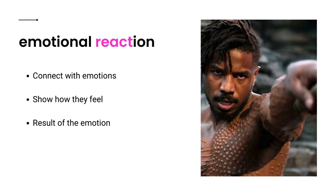Think about why your character is having an emotion, and describe their reaction. We connect with characters who have emotions, and you can create a realistic character by letting them show how they feel. Is your character in a situation that makes them angry? Describe your character's response. How do they act when angry? For example, they may slam their fist on the table, or they may stop talking and quietly plot their revenge. Instead of just naming an emotion, show the result of the emotion.